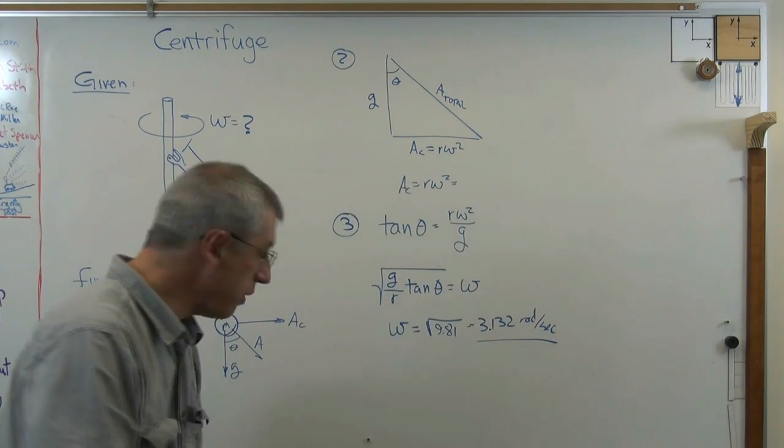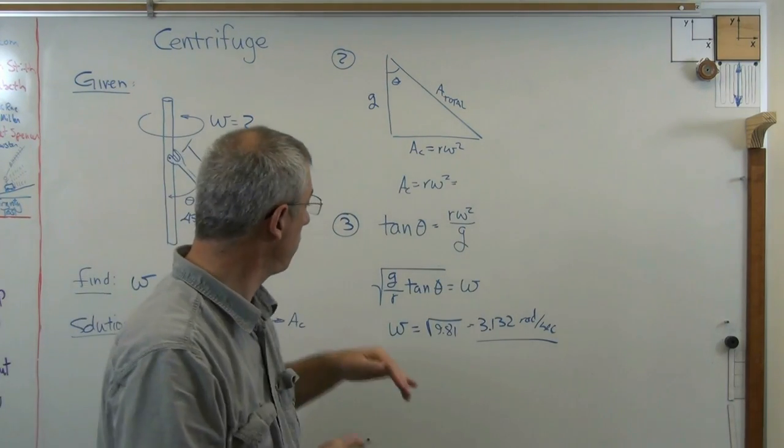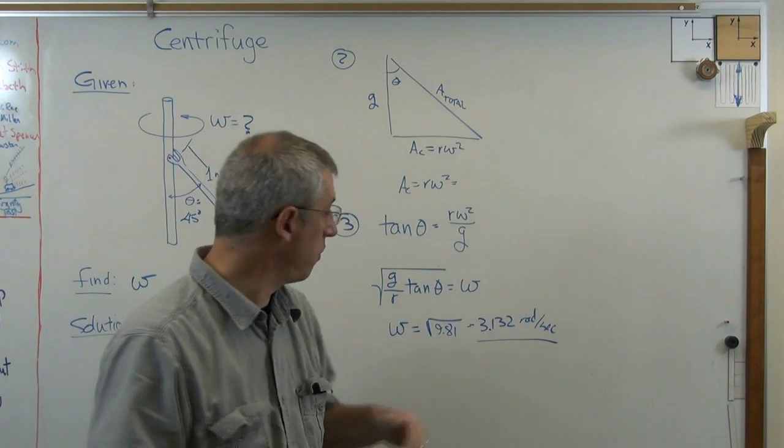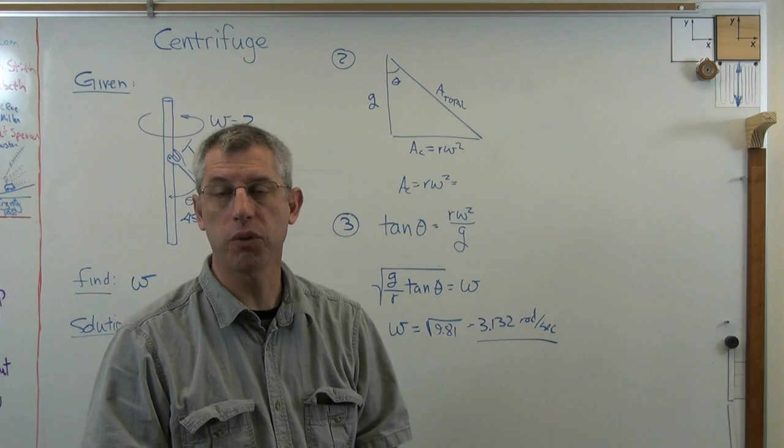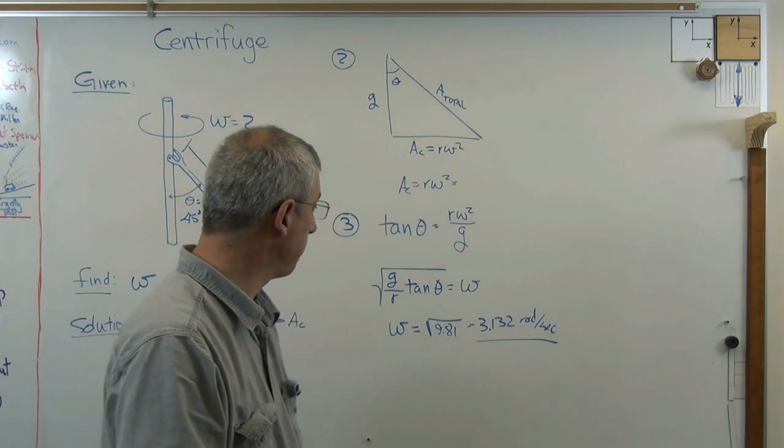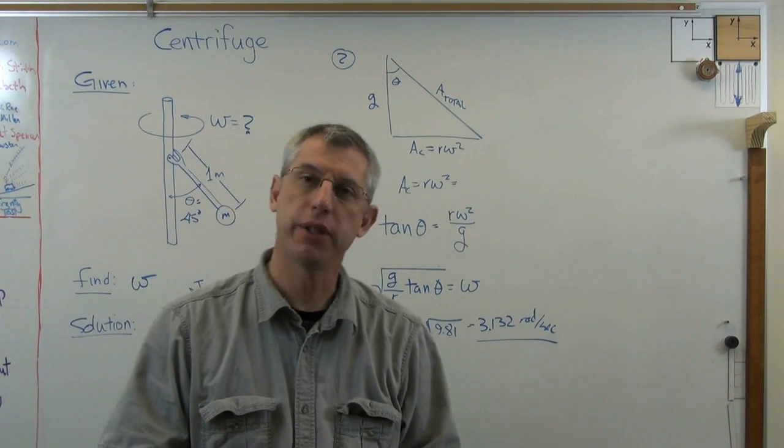So we can do this problem either way. We've done it one way and found the angle. We've done it another way and found the rotational velocity or rotational rate in radians per second. I hope this helps. And I'll see you next time.